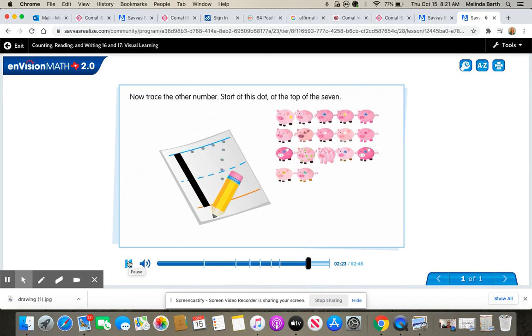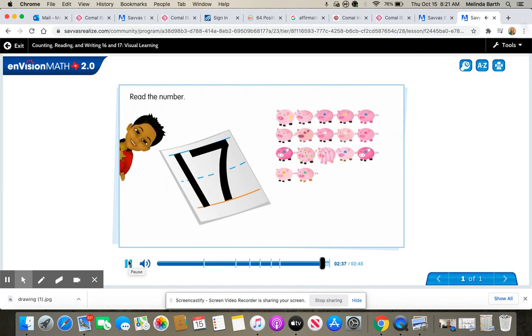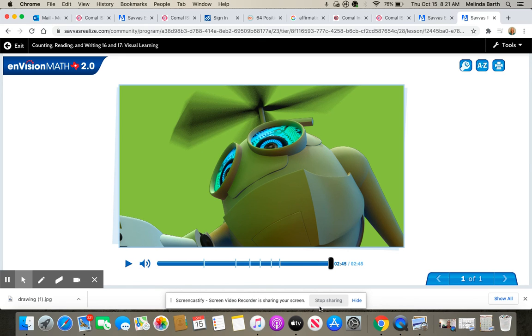Now trace the other number. Start at this dot at the top of the 7. First trace across, now trace down to finish the 7. Read the number. It says 17.